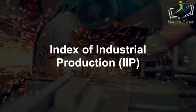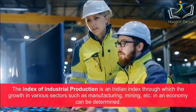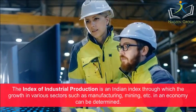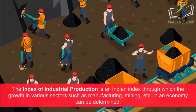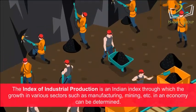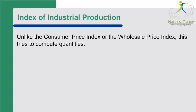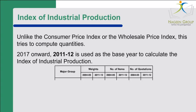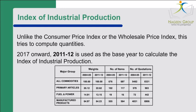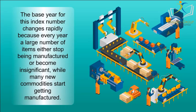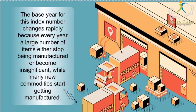Index of Industrial Production (IIP): The Index of Industrial Production is an Indian index through which the growth in various sectors such as manufacturing, mining, etc. in an economy can be determined. Unlike the CPI or WPI, this index tries to compute quantities. From 2017 onwards, 2011–12 is used as the base year to calculate the IIP. The base year for this index changes rapidly because every year a large number of items either stop being manufactured or become insignificant, while many new commodities start getting manufactured.